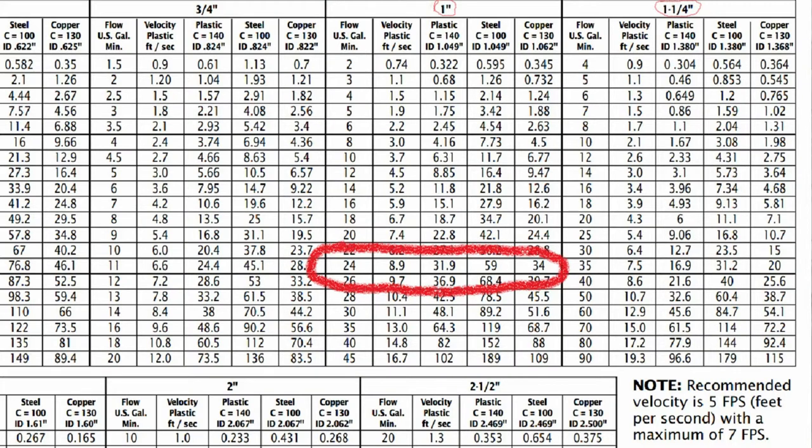So if we look at the chart for one inch pipe, the velocity for 24 gallons a minute is 8.9, which is more than seven. So we'll go over to the inch and a quarter chart and for 24 gallons a minute they list 25. For 25 our velocity is 5.4, which is good. We also want to take note of the friction loss in plastic pipe, which is what we'll be using because we'll need that later: 9.06.